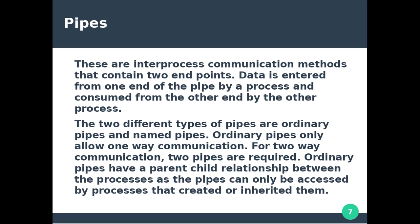If two-way communication is required in ordinary pipes, a parent-child relationship between processes is needed, as pipes can only be accessed by a process that created or inherited them.